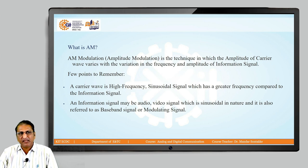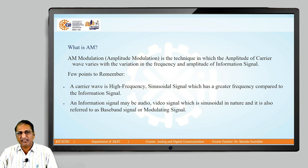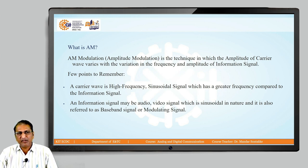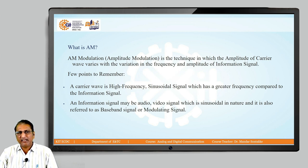AM is a technique in which the amplitude of the carrier varies while frequency and phase remain constant. The carrier is a high frequency sinusoidal signal which has a greater frequency compared to the information signal. The information signal may be an audio or video signal which is sinusoidal in nature, and it is also referred to as baseband signal or modulating signal.